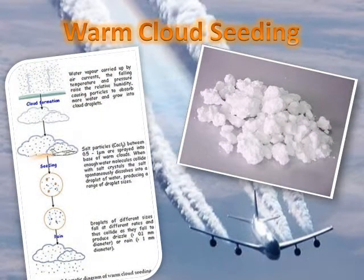Warm cloud seeding is conducted by dispersing flares containing calcium chloride. These particles attract water vapor, forming new water droplets. Common salt may also be used if processed to powder form, and is generally distributed by aircraft.